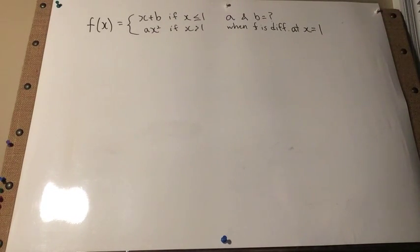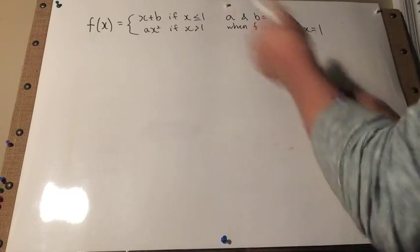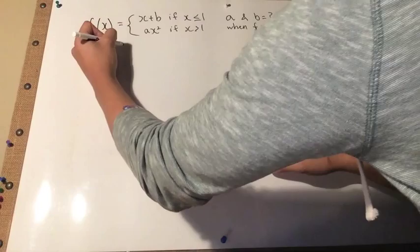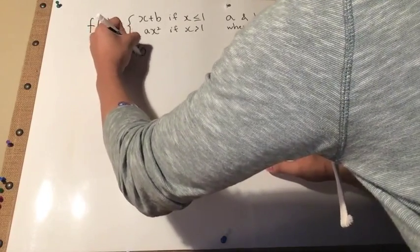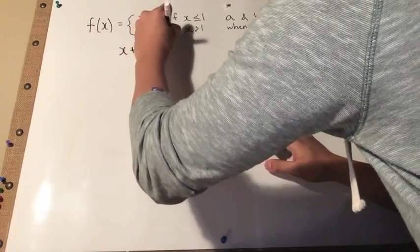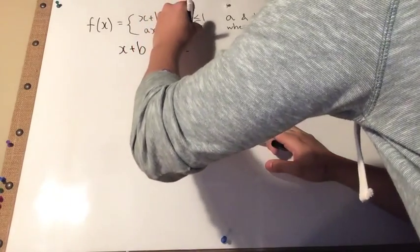Since the function is continuous, we can set the two functions equal to each other. So x plus b equals ax squared.